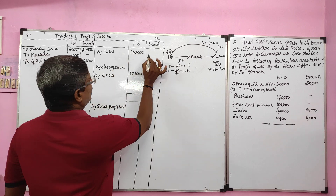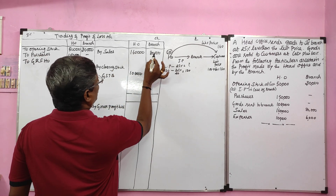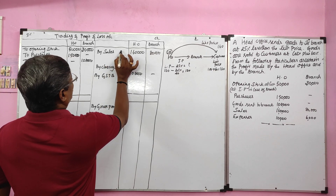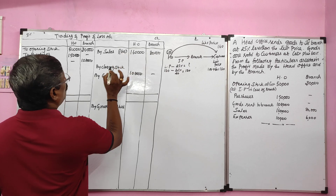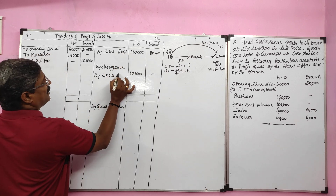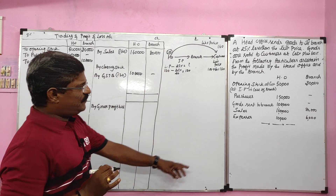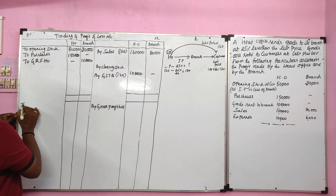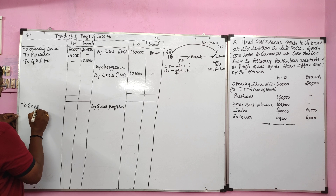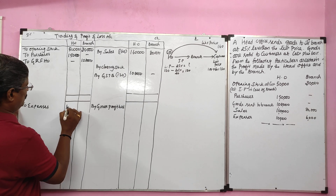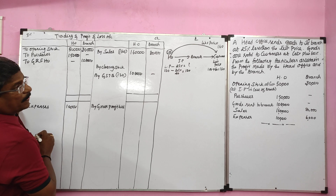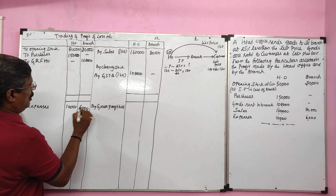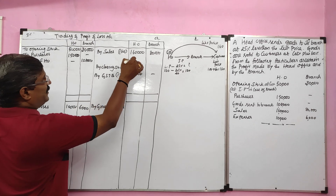Sales of branch: 80,000. We already learned that sales to customers are at list price, which is 160, and goods sent to branch are at invoice price 120. Expenses of head office 10,000 and expenses of branch 6,000 should be debited to the profit and loss account.